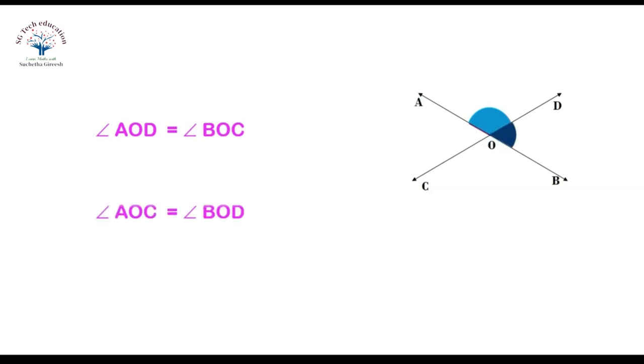Hence, we can visualize that vertically opposite angles are always equal.